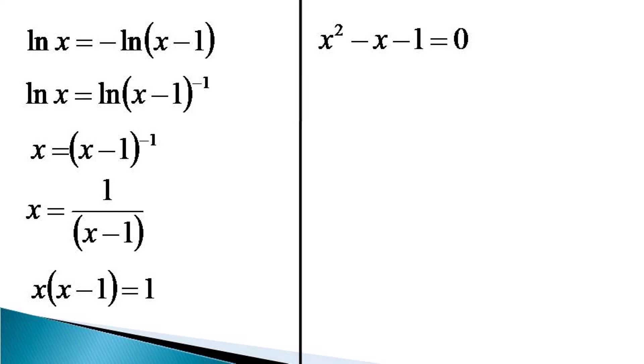From the quadratic formula, we get x equals (1 ± √((-1)² - 4(1)(-1)))/2, which results in two roots: x equals (1 ± √5)/2.